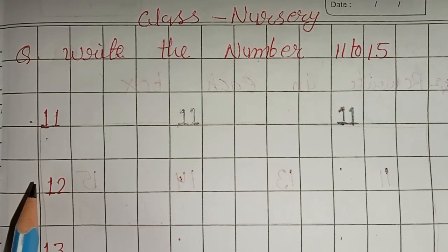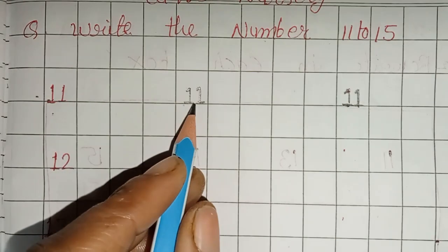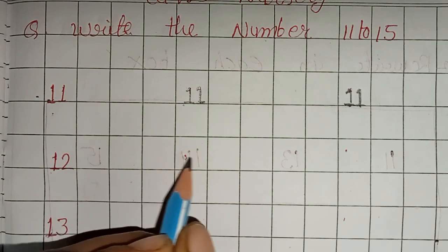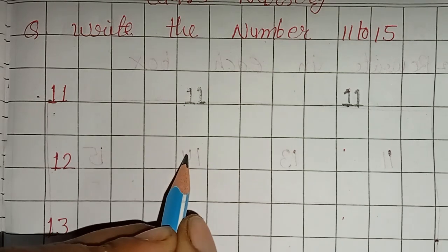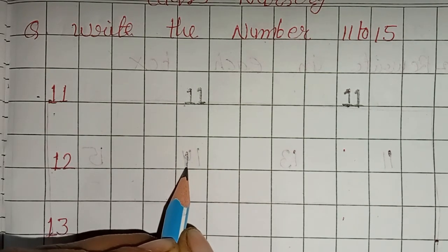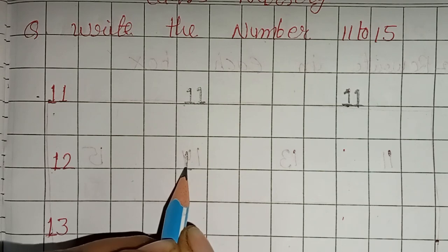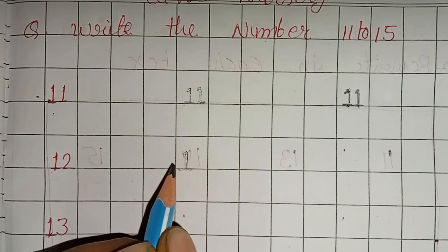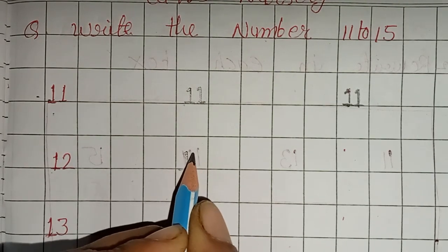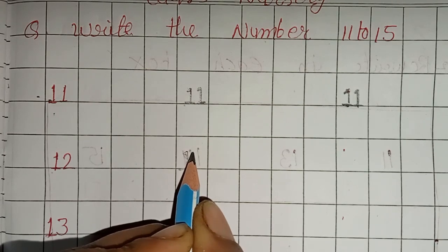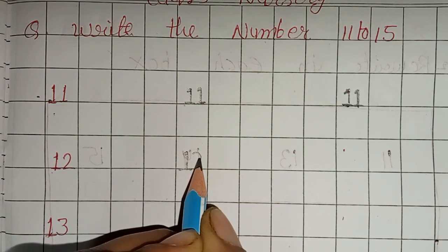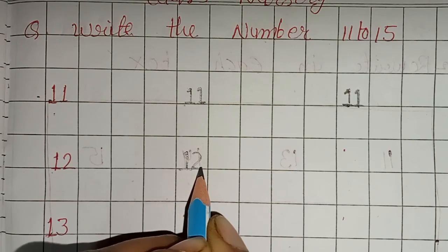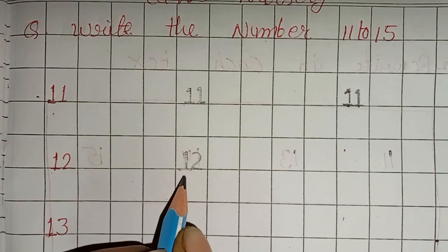Next number is 12. To draw number 12, first draw a small slanting line going down, then one small slanting, then for the number 2 draw a small curve and going down, add a small sleeping line at the bottom. This is number 12.